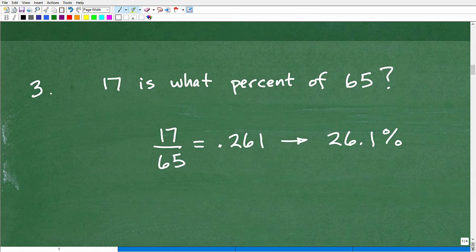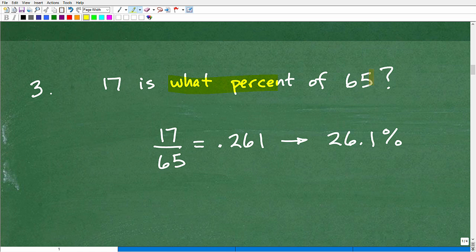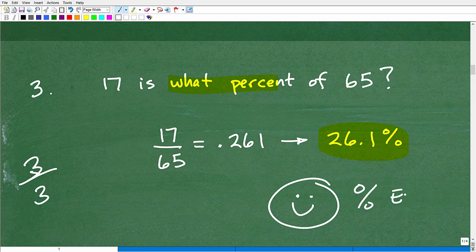Okay. So let's go ahead to our last question. Number three, 17 is what percent of 65? The answer is 26.1%. And if you got three out of three on this quiz, then, oh, wow. You are definitely a percent expert. Give yourself an A plus and like five stars. That's excellent.